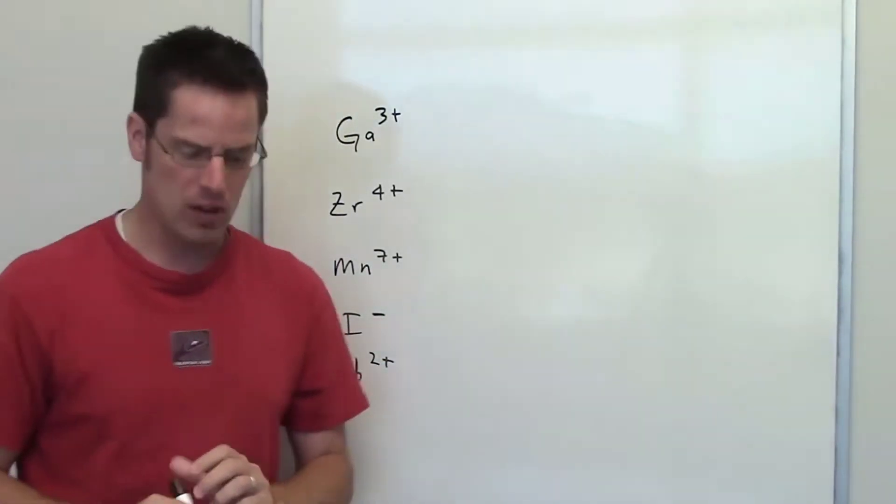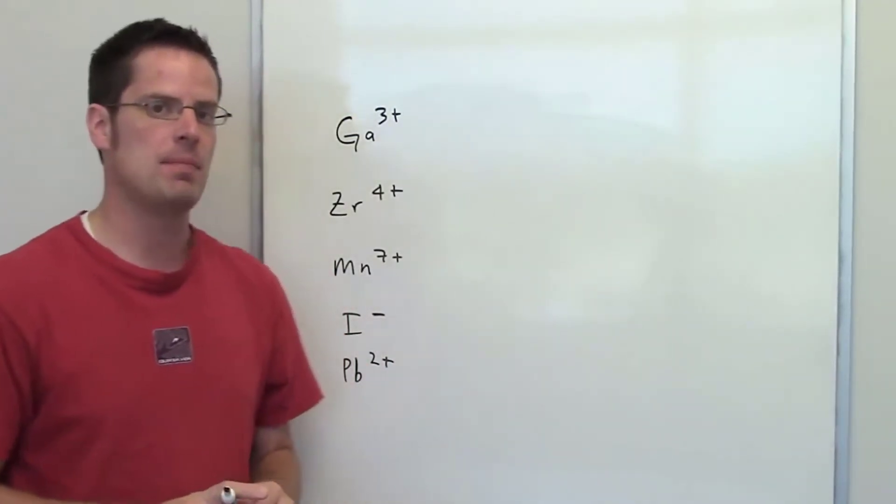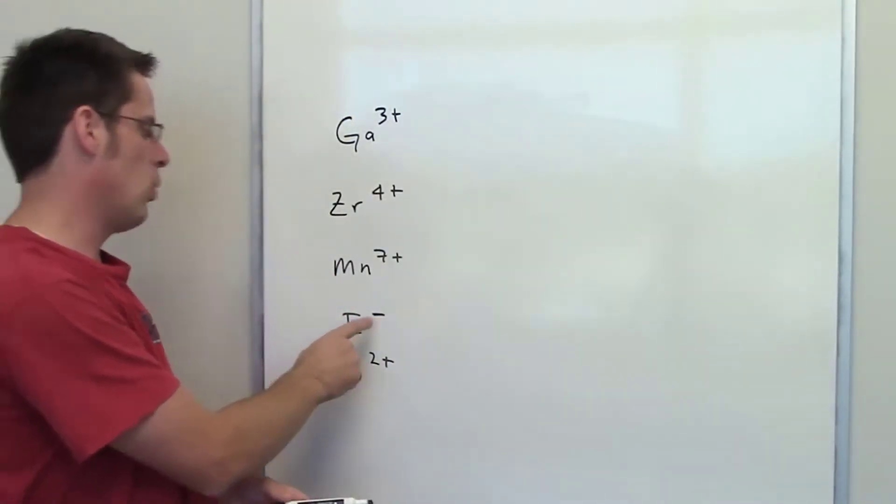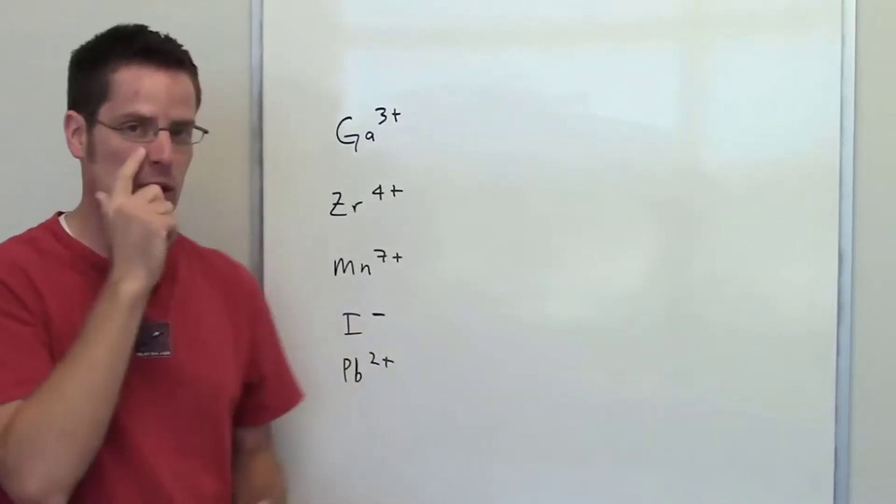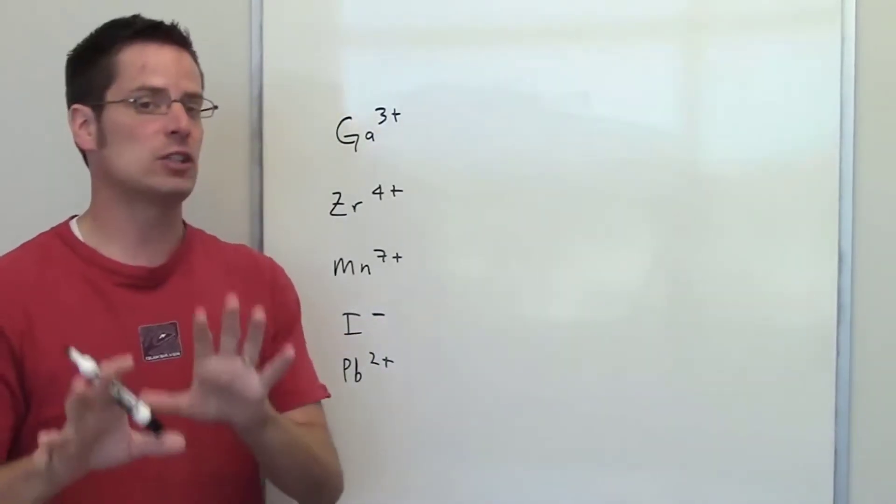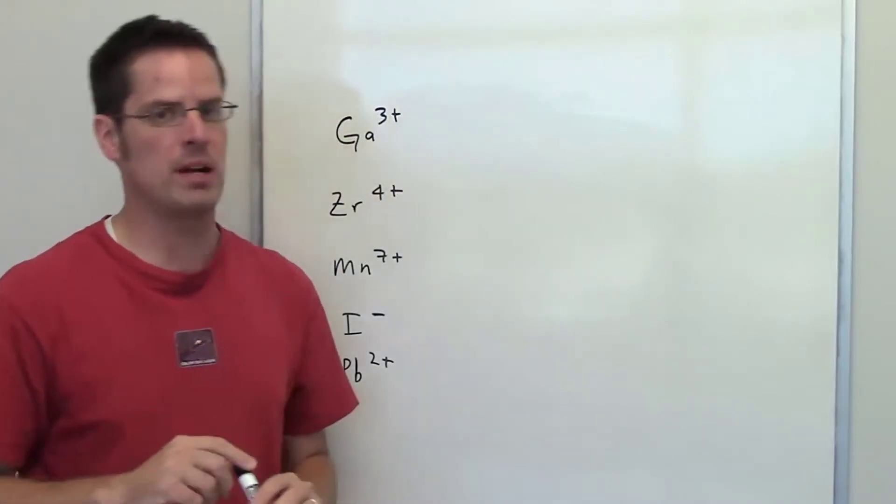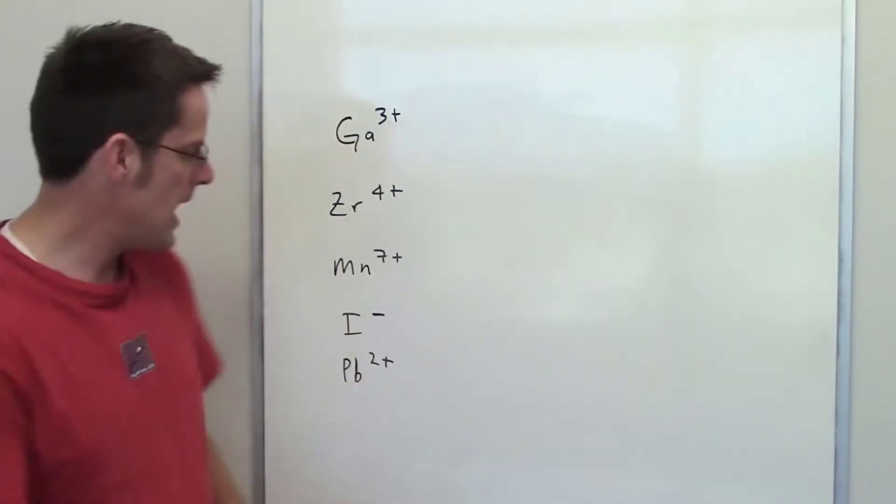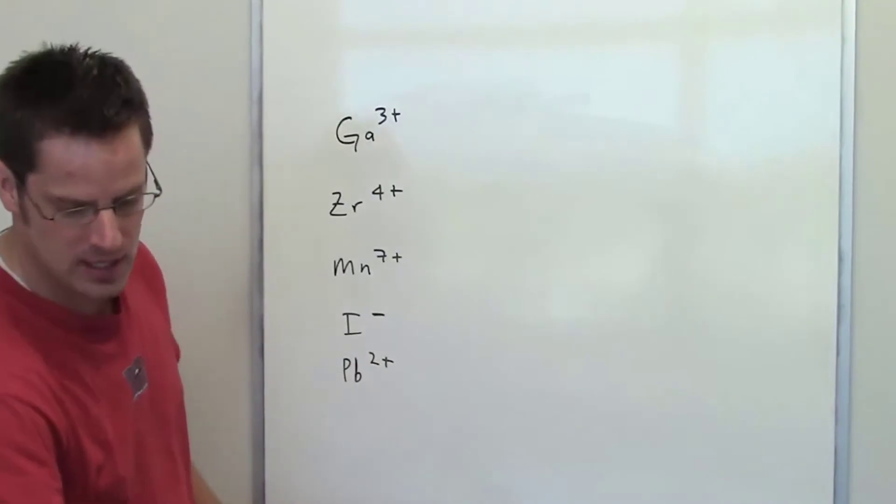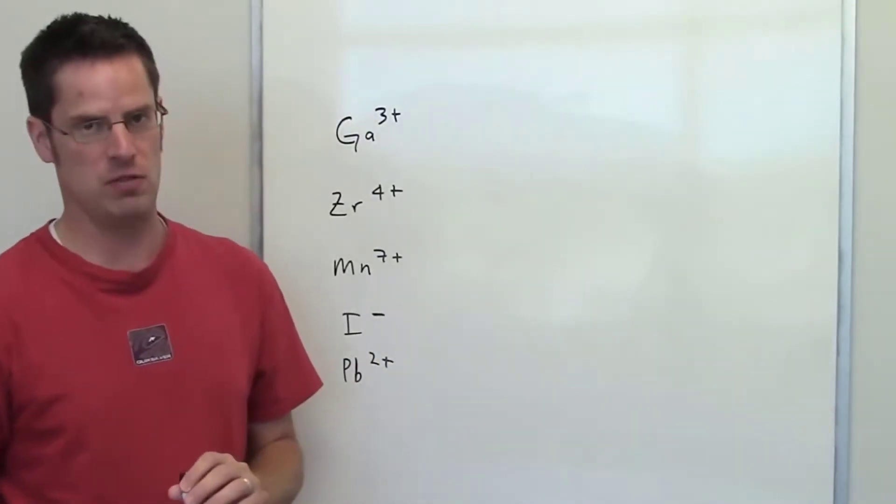Iodine by itself is element number 53 on the periodic table. When it attains one electron to get a negative one charge, it now feels, electronically speaking, like it has shifted one position to the right on the periodic table. So iodide, I minus, is isoelectronic with xenon, element number 54.